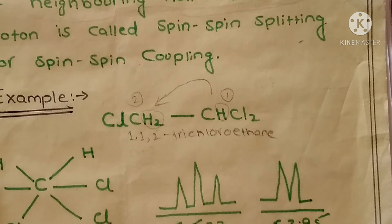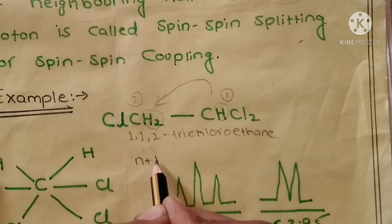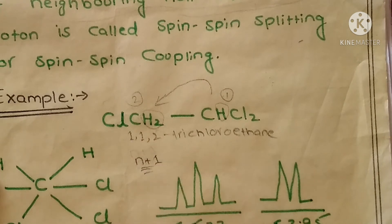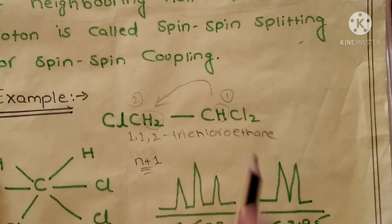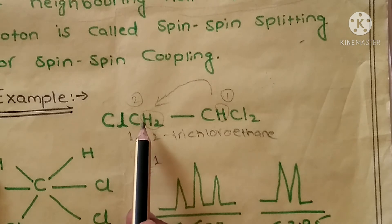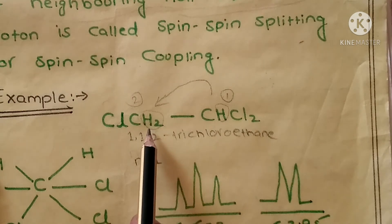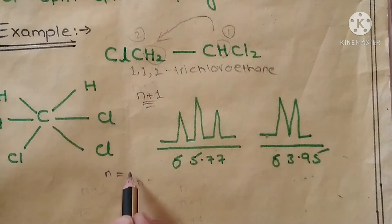This type of splitting can be explained on the basis of the n+1 rule. What is meant by n? n represents the number of non-equivalent protons. So if we talk about this set, then this set influences the second set of protons, and in the second set there are two protons present. So the value of n is equal to 2.